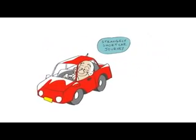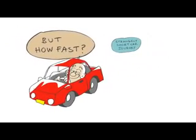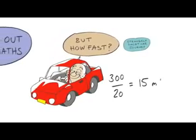For example, suppose a car travels down a road 300 metres long and it takes 20 seconds. Its speed is how many metres it's travelled each second. So its speed is 300 divided by 20. That's 15 metres per second.